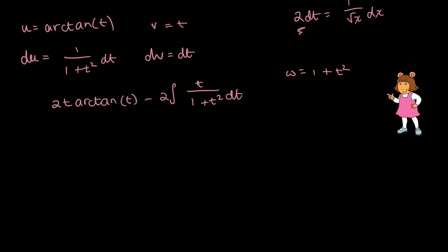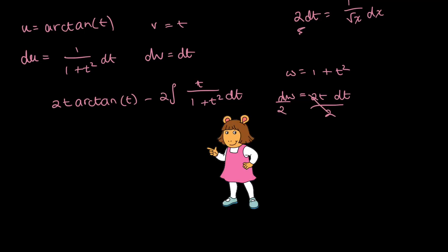Let's say this time w is going to be equal to 1 plus t squared. And dw is going to be the derivative of that, which is 2t dt. And now I'll just divide by 2 on both sides, so that 1 half dw is equal to t dt.